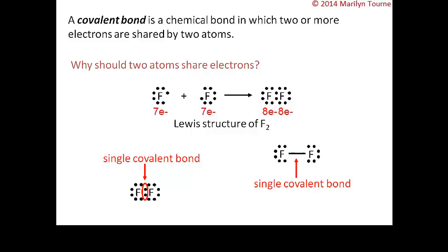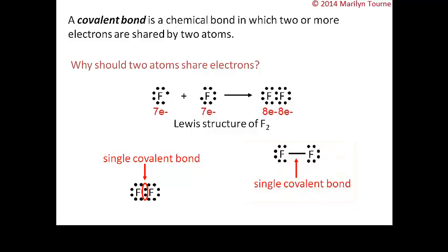There are two ways of depicting covalent bonds. We can write the compound using dot notation, showing each fluorine sharing one electron to complete its octet, or we can depict it as a single line for simplicity. The shared pair of electrons is represented by a single line. In a covalent bond, each electron in a shared pair is attracted to both nuclei, and this attraction is what holds the two atoms together.